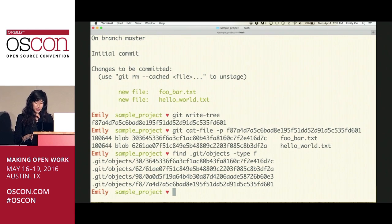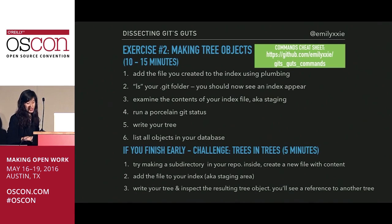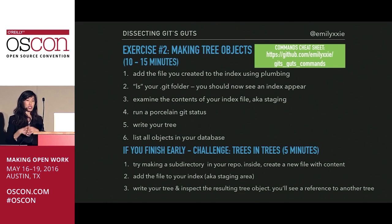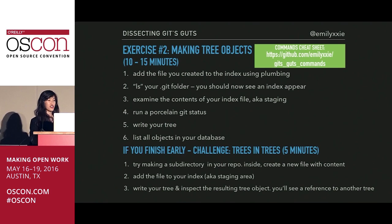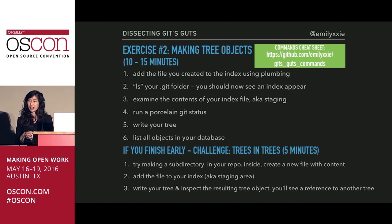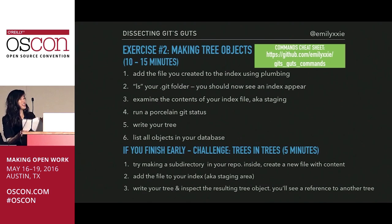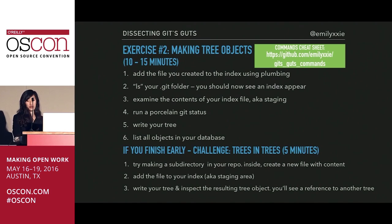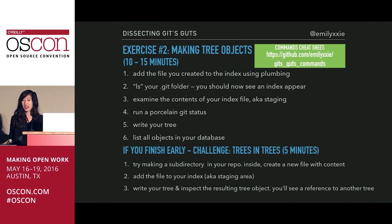Now I'm going to give you 20 minutes to do exactly what I just did so you can digest everything and do further explorations yourself. If you finish early, there's an additional challenge built in. Now it's official — we have a snapshot of our current working directory stored into our Git objects folder, and that is the tree object.